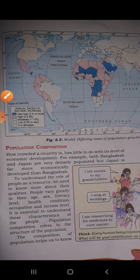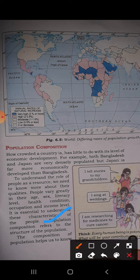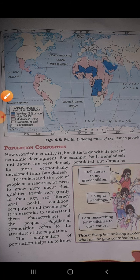Today we will discuss population composition. Population composition refers to the structure of the population — including age, sex, literacy, health condition, occupation, and income level. These are all factors we consider in population composition. This helps us understand how crowded a country is and the nature of that population.